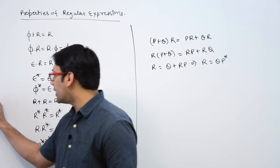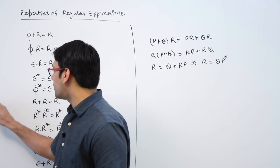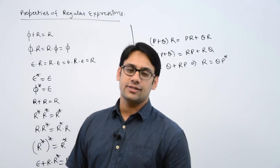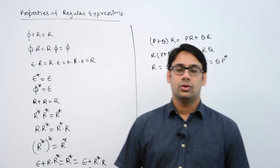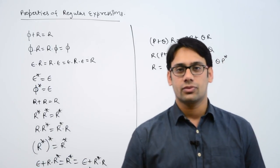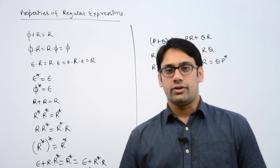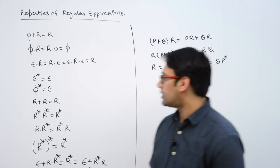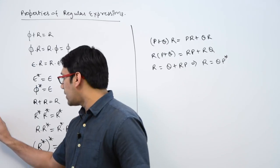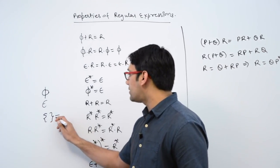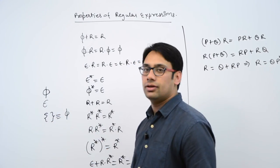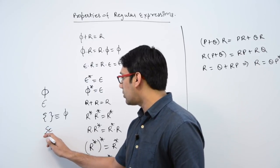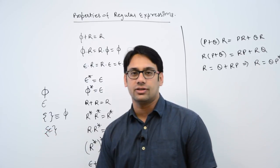There is a difference between phi and epsilon. Epsilon means it is a string whose length is 0. It is not an empty set — phi is representing an empty set. When I say epsilon, it means a string of length 0.